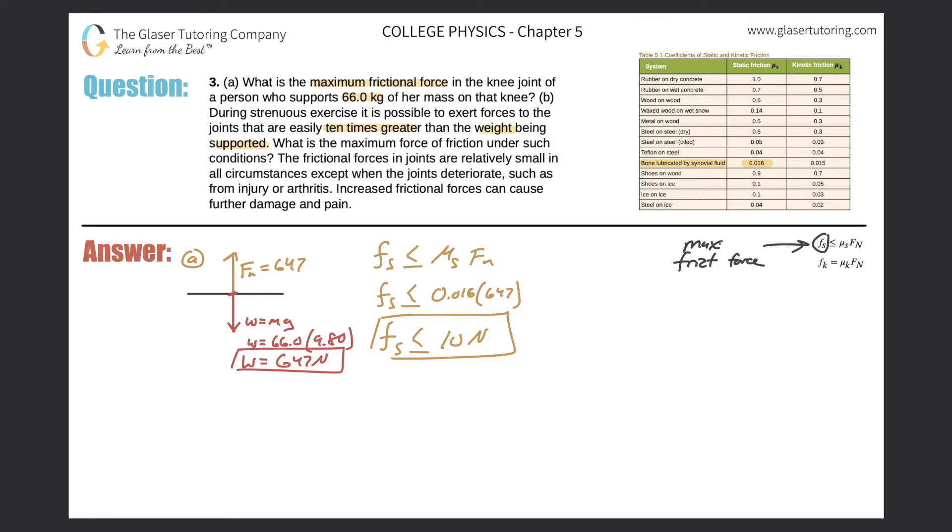If I were to draw a free body diagram here, let me just get my set of axes. It says during strenuous exercise the joints can easily support a weight 10 times greater than the weight that's being supported. So therefore now what's the weight pointing down? The weight is equal to 10 times that of 647, so now the weight is going to be 6470 newtons. What's then the normal force? Well it would directly oppose that. It'd be the same amount - the system is in equilibrium. So the normal force is going to be equal to 6470 newtons.